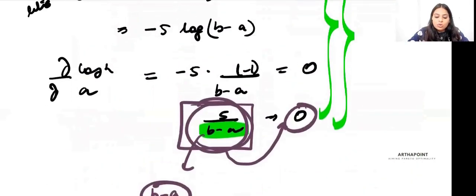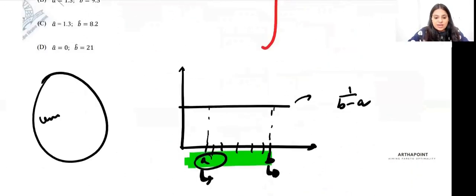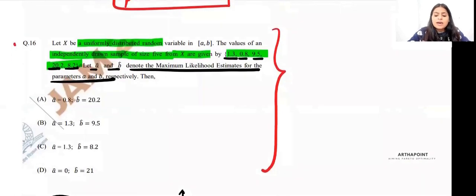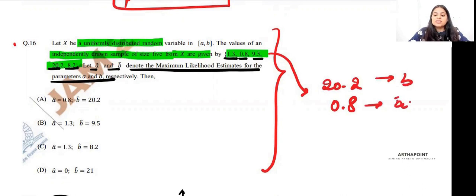So ideally, what do we do? From the sample, we pick the minimum value, 0.8, and the maximum value, 20.2. We say that A is 0.8 and B is 20.2.